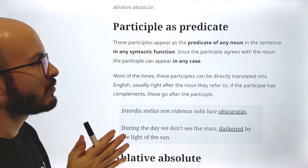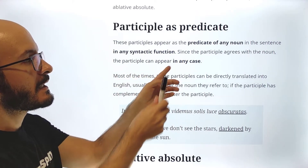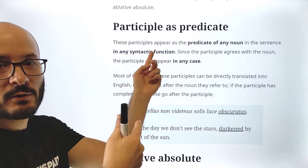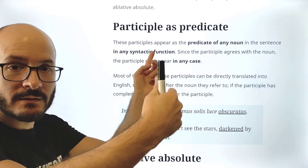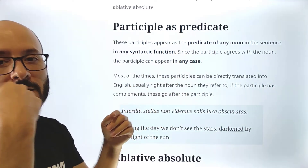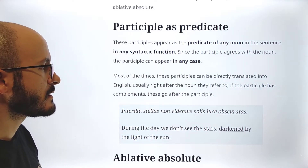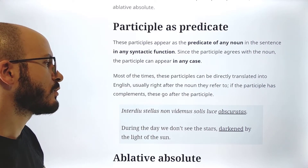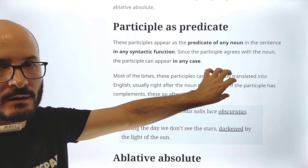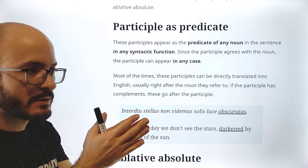Participle as predicate: these participles appear as the predicate of any noun in the sentence in any syntactic function. Since the participle agrees with the noun, the participle can appear in any case — any case because the noun it refers to can have any function. For example, if the noun the participle refers to is a direct object, it is in the accusative case, so the participle is also in the accusative, because it has to agree in case, number, and gender. Most of the times these participles can be directly translated into English, usually right after the noun they refer to. If the participle has complements, these go after the participle. It is important to respect the order of words, because English has a quite strict word order, whereas Latin is kind of the opposite — words can be even lines away from each other.